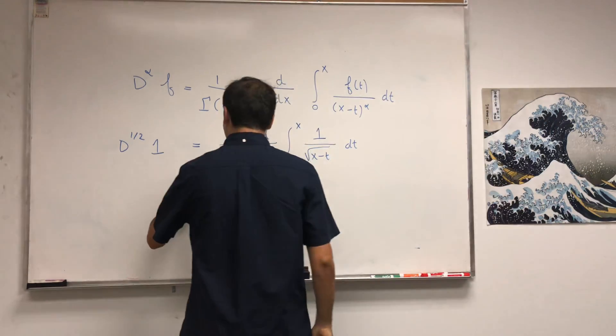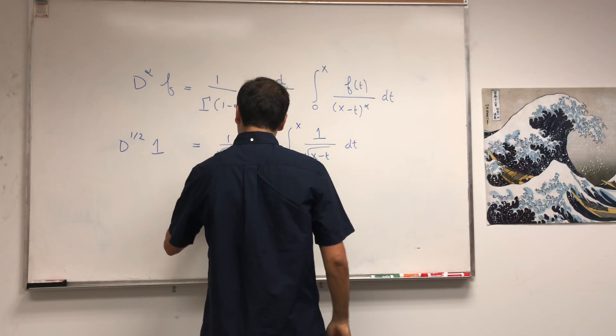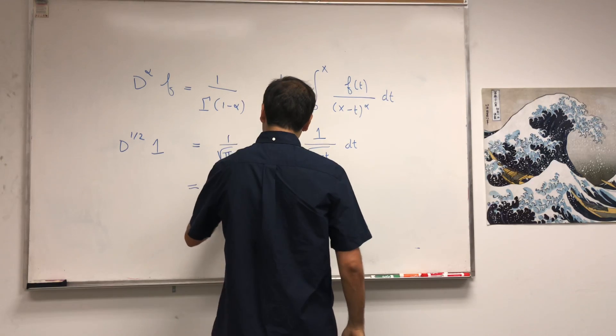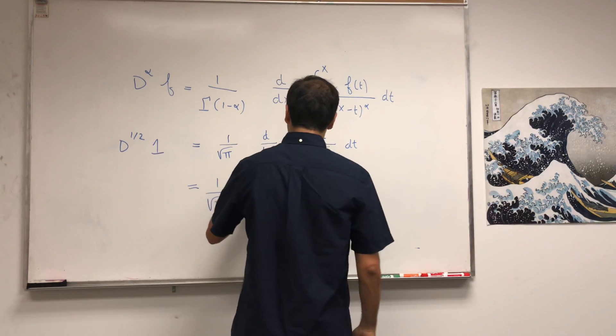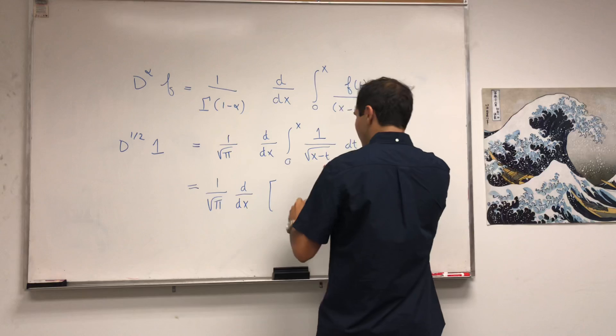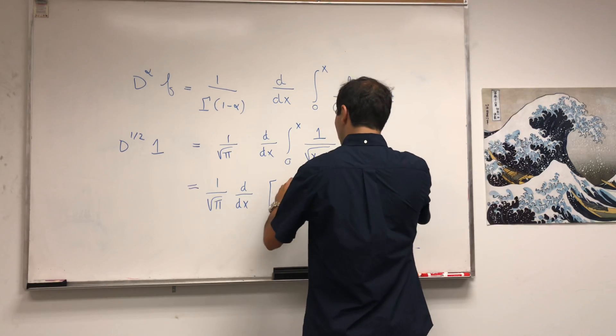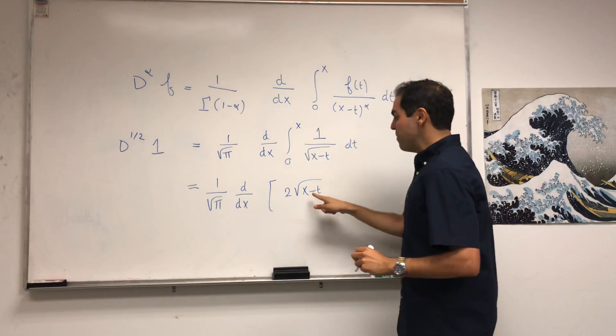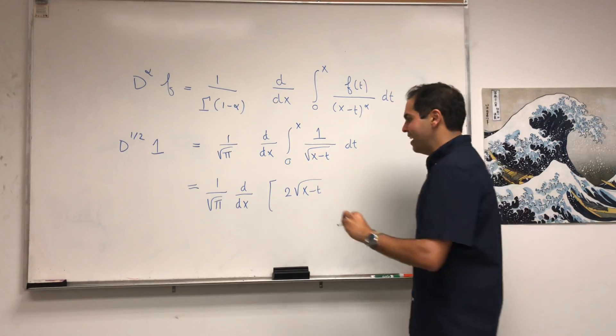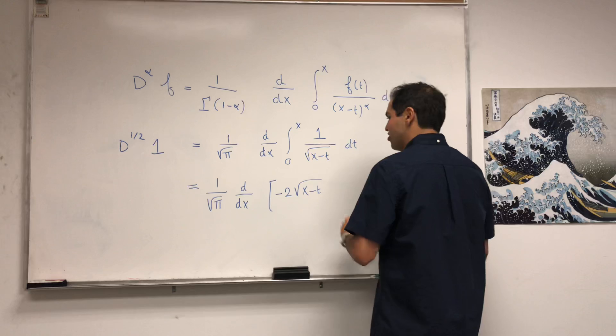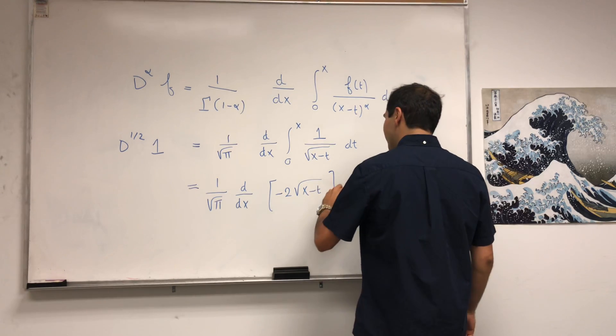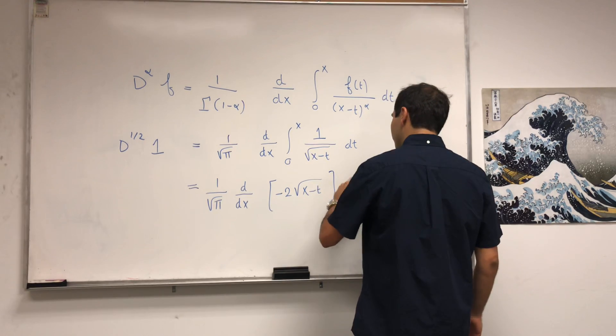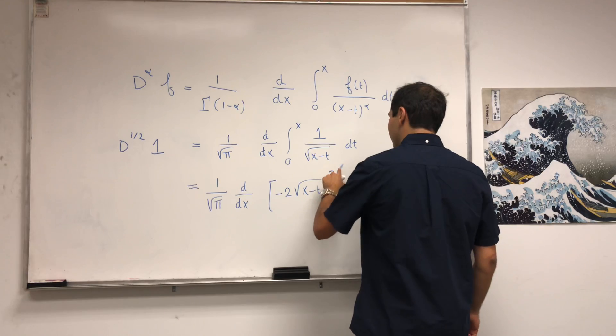And the nice thing is this is actually easy to integrate. So let's do that. 1 over square root of pi, d/dx, and now an anti-derivative of this becomes 2 square root of (x-t). Except when you differentiate this you have this extra minus sign, so we have to do minus, and you take that from t equals 0 to t equals x.